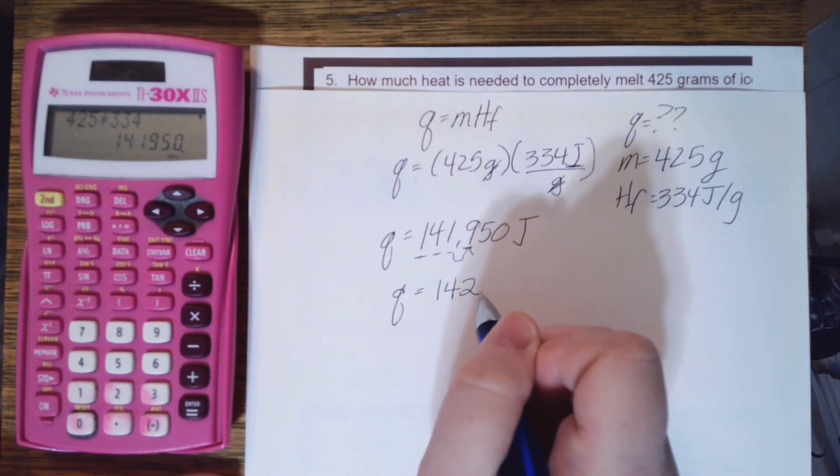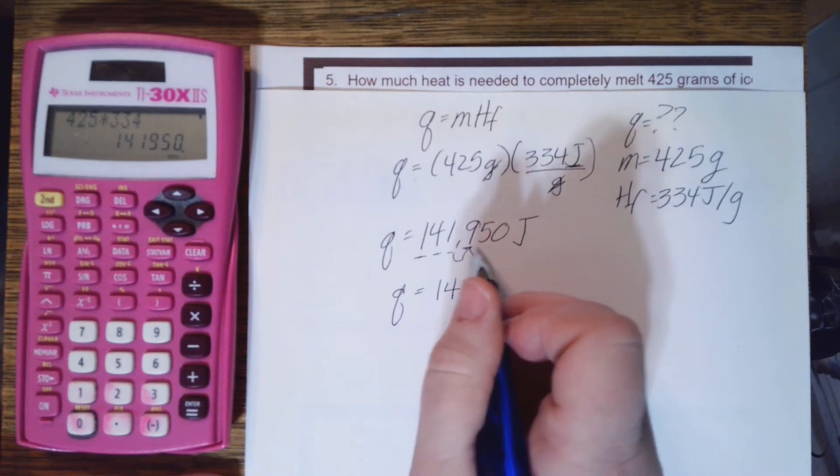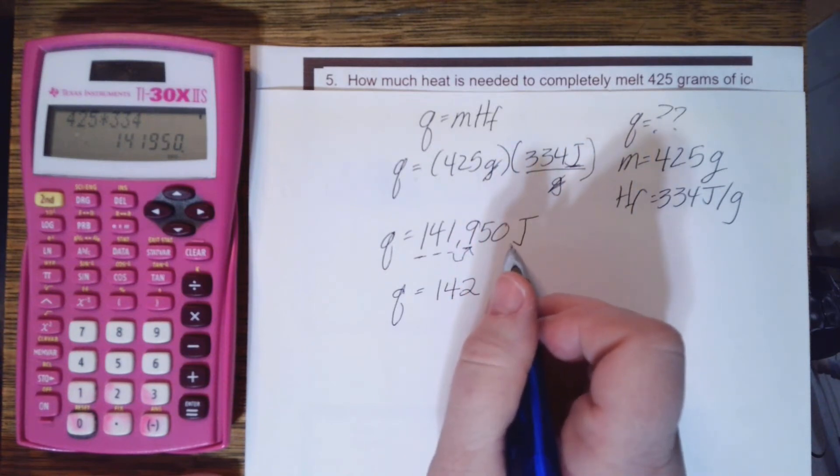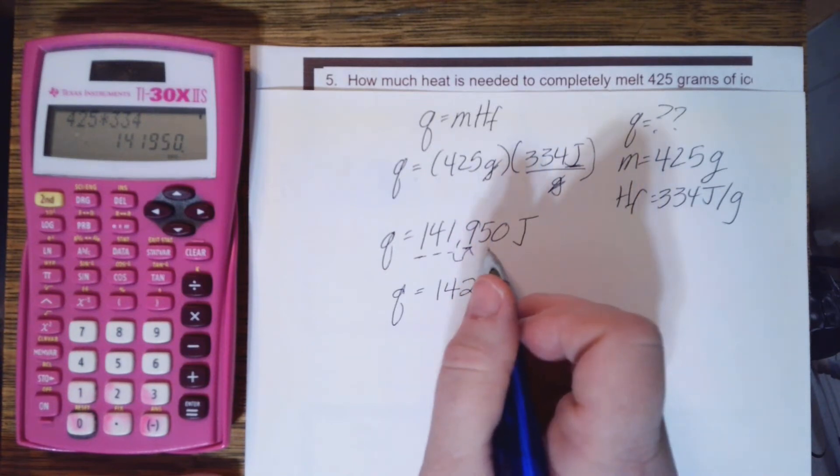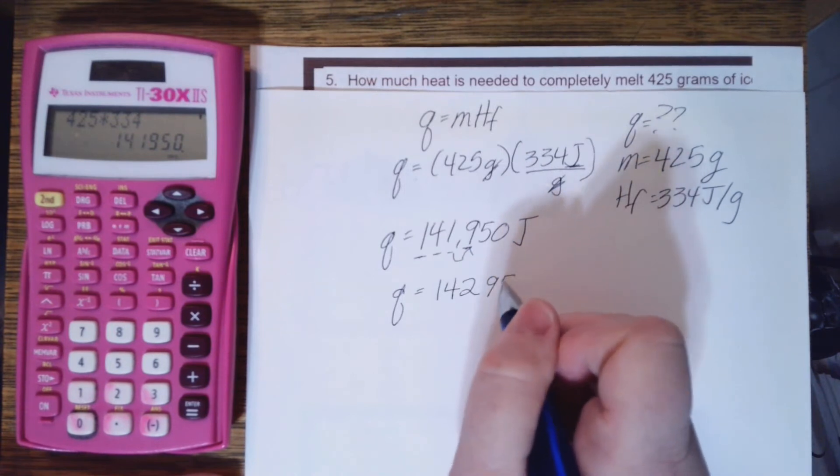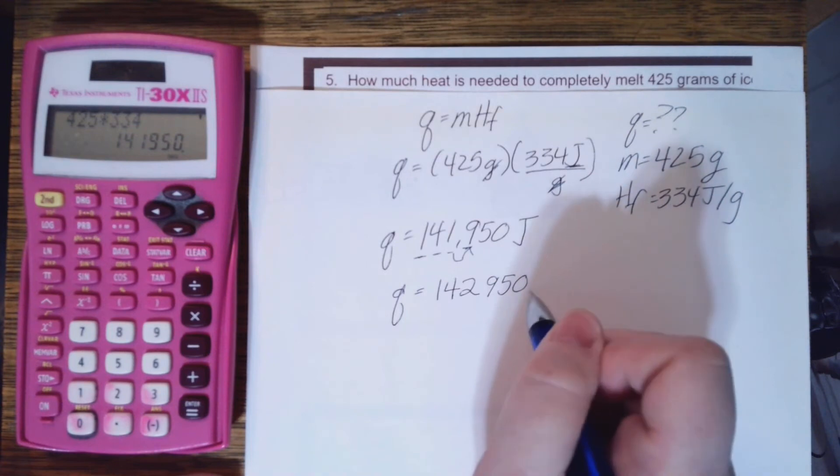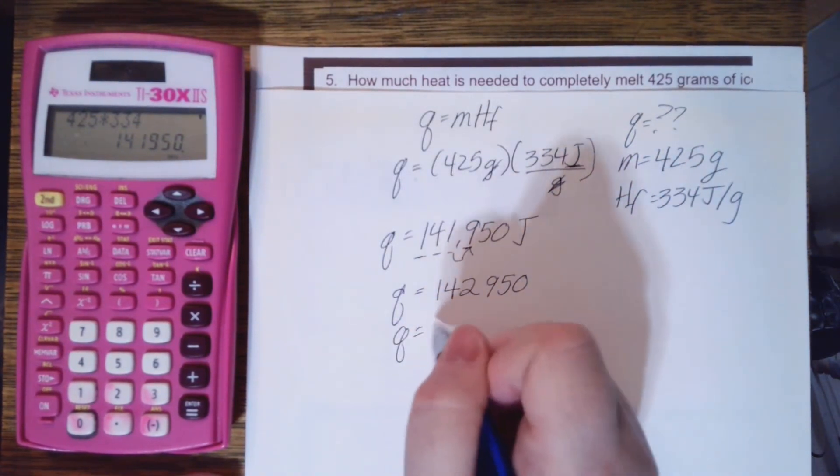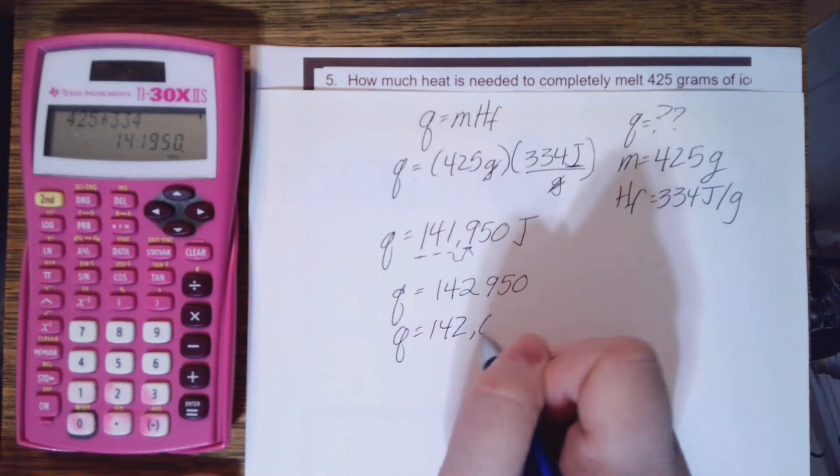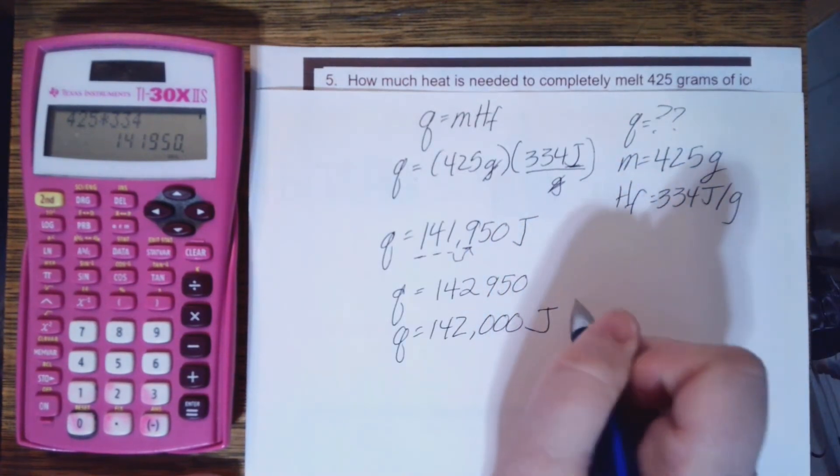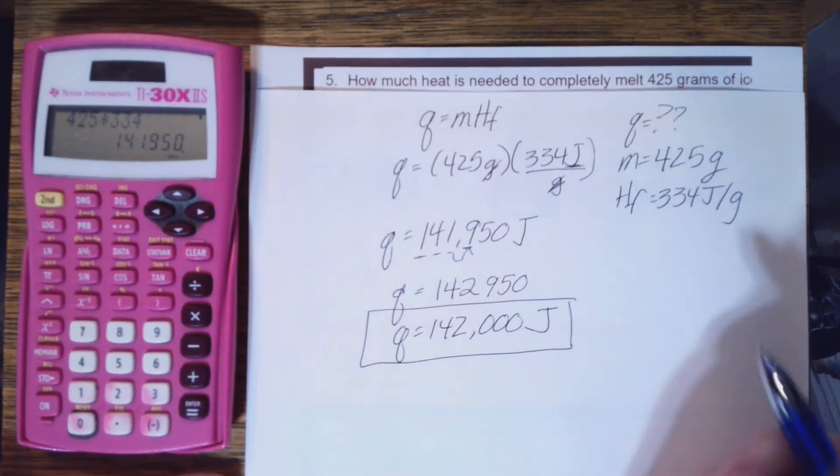142, but I need to fill in the remaining digits up until the decimal point with a zero. Nine, five, zero.